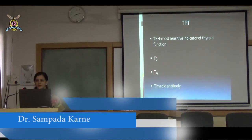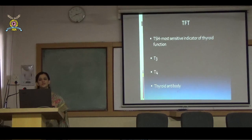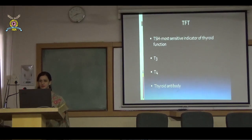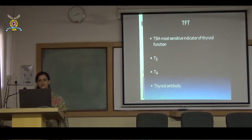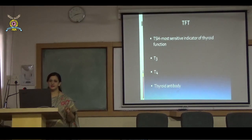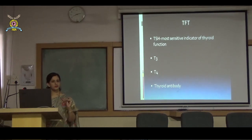TSH is considered the most sensitive indicator of thyroid function — it is secreted by the pituitary, not the thyroid, but it is a very sensitive marker. We also do T3, T4, and thyroid antibodies, which must be ordered separately. Among thyroid antibodies — TPO antibodies, thyroglobulin antibodies, thyroid peroxidase antibodies — the most important are the TPO antibodies.